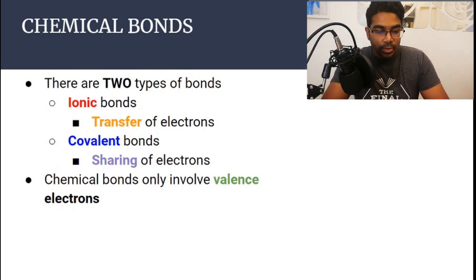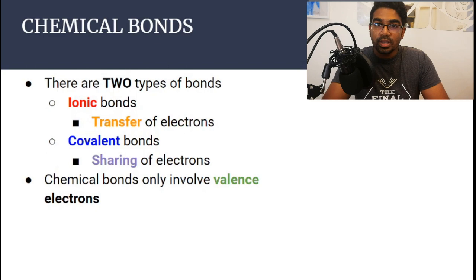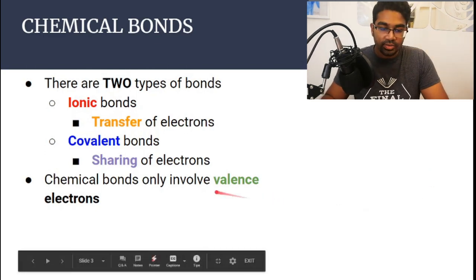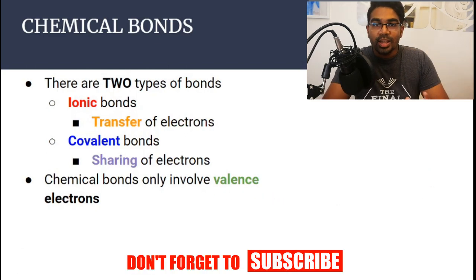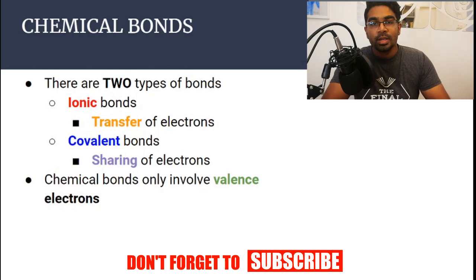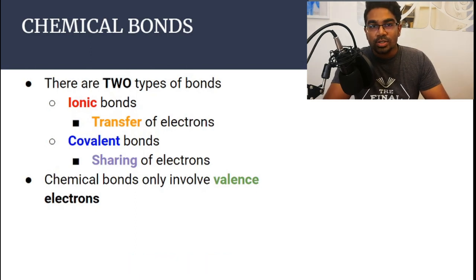It's important to note that chemical bonds only involve the valence electrons — the electrons in the outermost shell. The electrons on the inner shells are not involved in bonding.